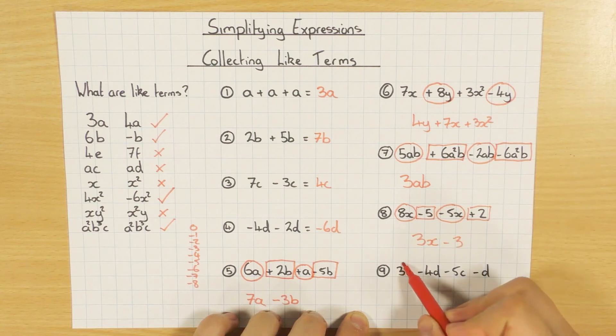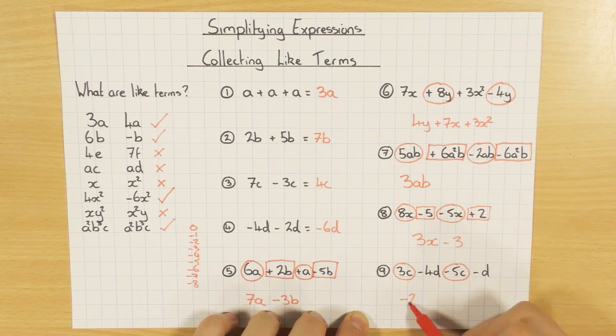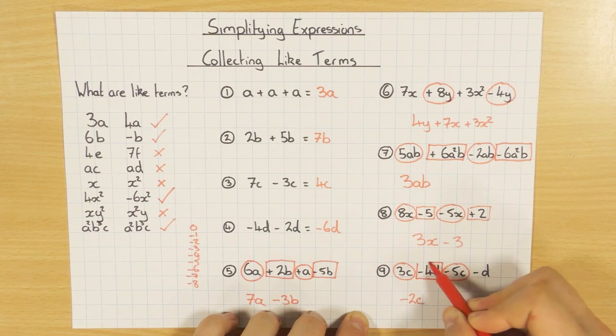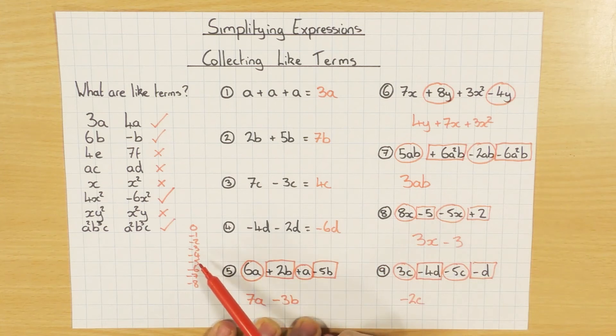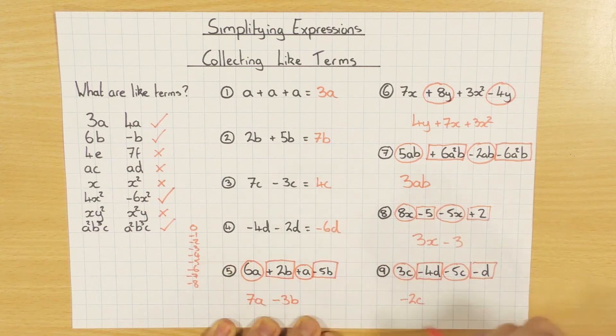And last one for this page, I've got my C. 3C minus 5C. So 3 take away 5 is minus 2C. And then I've got my Ds minus 4D minus another D. So again, I'm going to come over to my number line here to help me. I start with my minus 4. I just take away another one. I go down then if I take away. So I'm left with minus 5D.